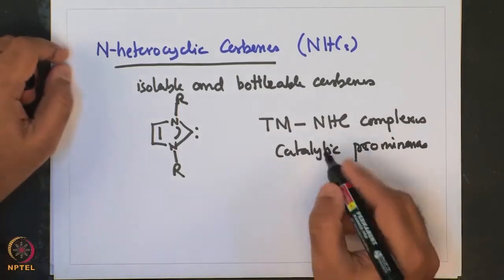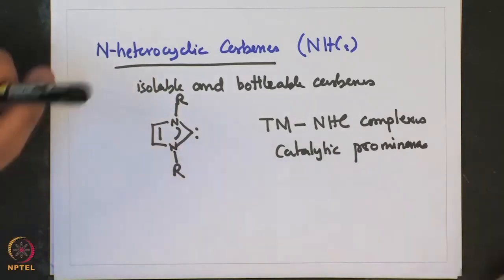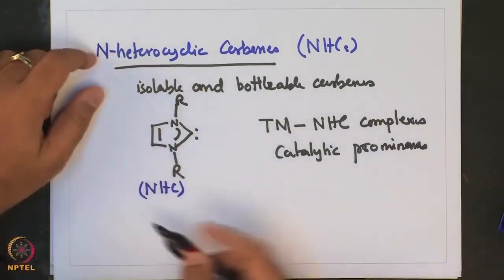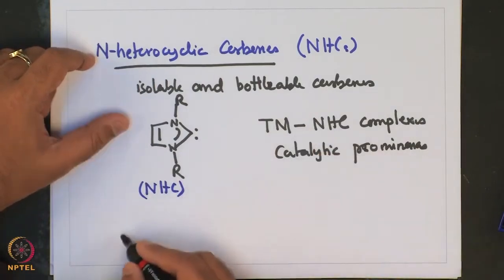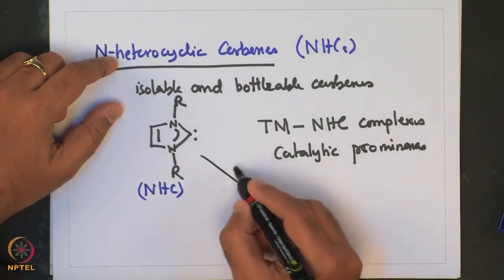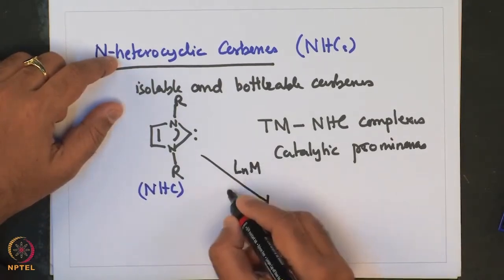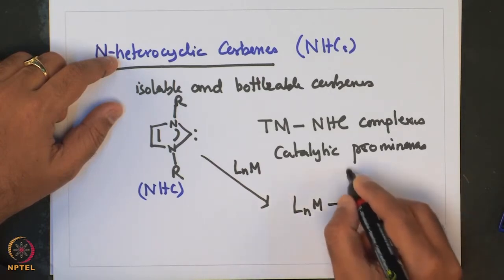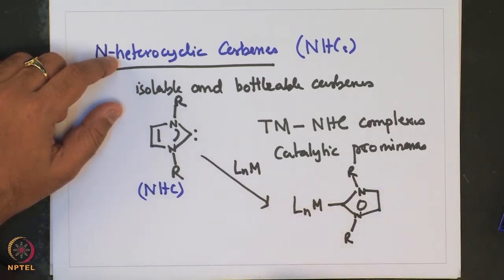In the last lecture, we discussed how transition metal NHC complexes are formed. One approach is the reaction of free carbene with a transition metal precursor. We have also seen that transition metal carbene complexes can be obtained from imidazolium precursors, which give free carbene upon reaction with a base to yield the transition metal carbene complexes.